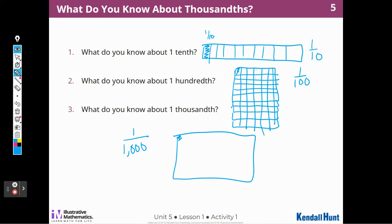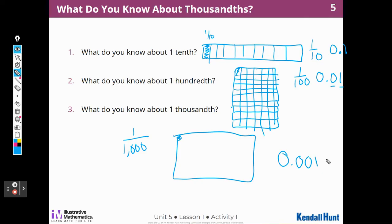I also know that I can write these same numbers as decimals. I can write one-tenth as zero point one. One-hundredth as zero point zero one — tenths, hundredths. And one-thousandth as zero point zero zero one — tenths, hundredths, thousandths. So this decimal is the same as one-thousandth, this one is one-hundredth, and that one is one-tenth.